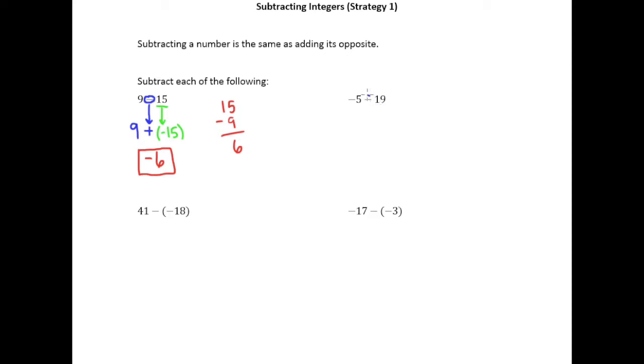This however is a subtraction sign. So the idea is we're going to change the subtraction sign to an addition sign. Leave the negative 5 alone. And then the number next to that subtraction sign gets changed to its opposite. So the opposite of 19 is negative 19. So now of course we're adding two numbers of the same sign. That becomes 24 and since they're both negative that's a negative 24 is our answer.